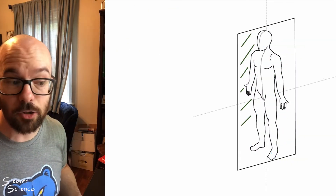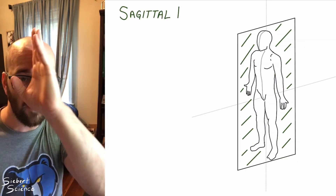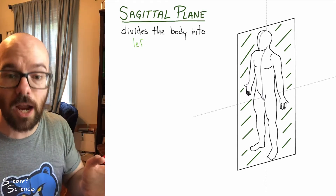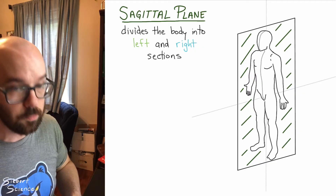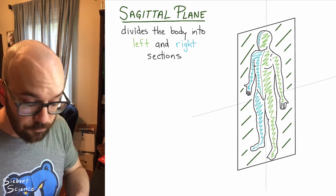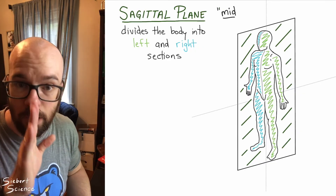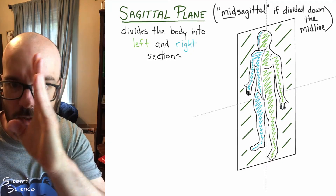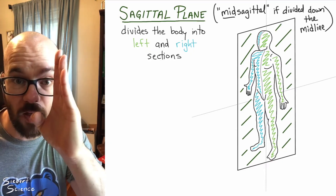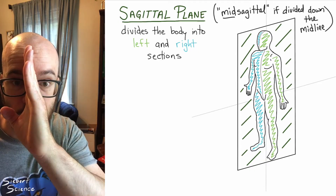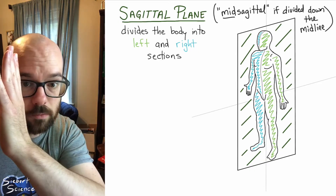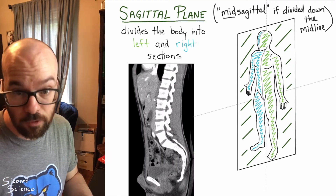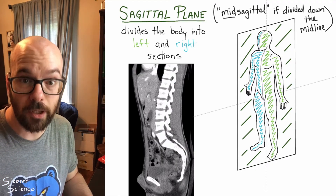Next we have the sagittal plane, which divides the body into the left half and right half — shown in blue and green. If we divide the body right down the middle, we call that a mid-sagittal. If it's divided off to the side, that's a regular sagittal. Here's an example: we've got a view from the side. Anytime you see a view from the side, you know it's a sagittal plane. You can remember they both start with S — side, sagittal.